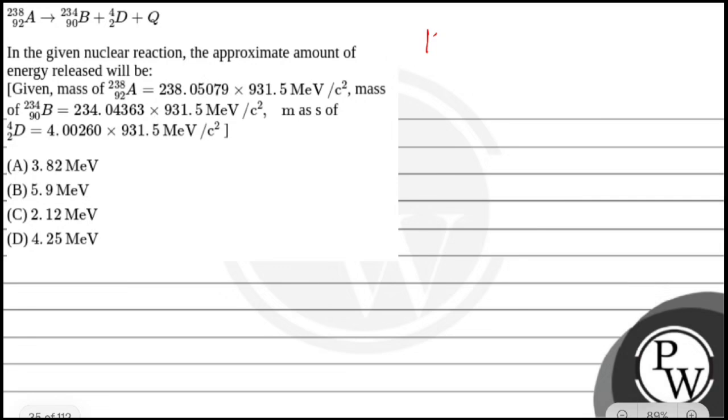Right, so the key concept used here is Q-value. Q-value is the amount of energy released or absorbed in a reaction. This is called Q-value. We need to find how much energy is released or absorbed.